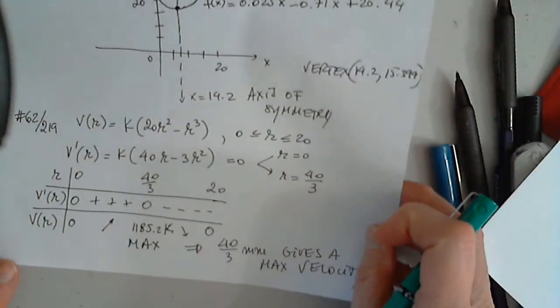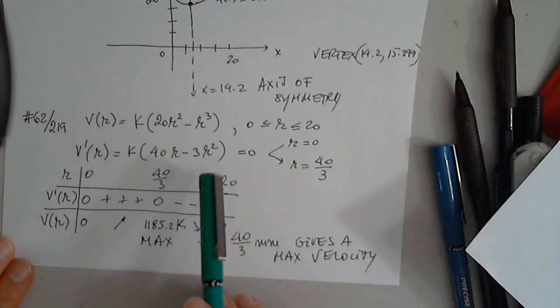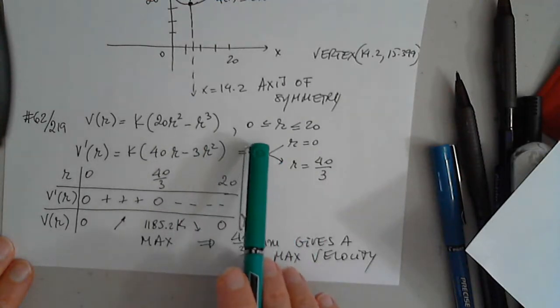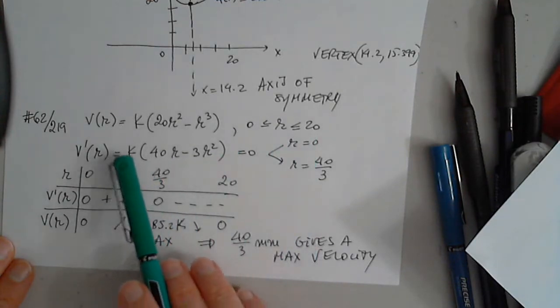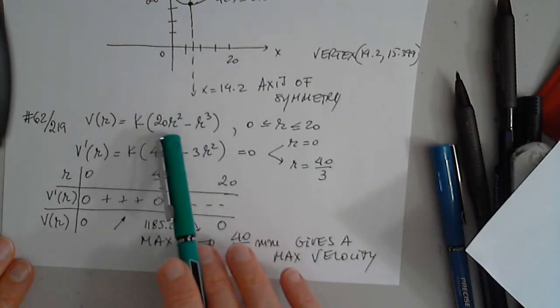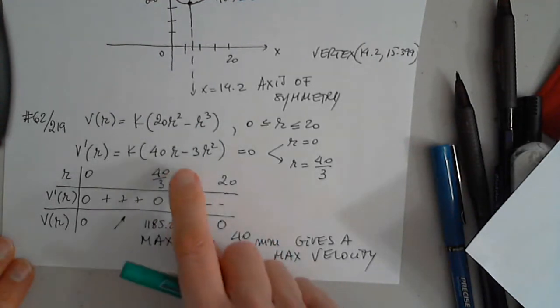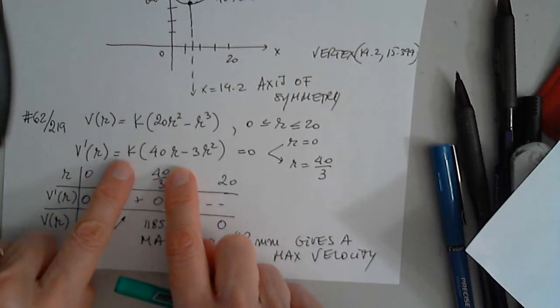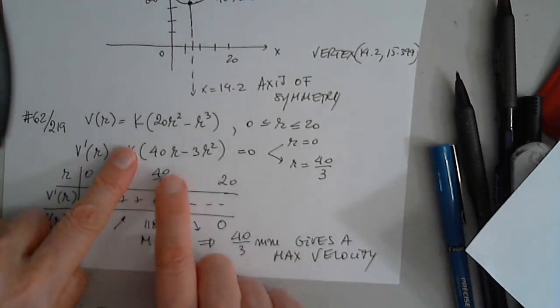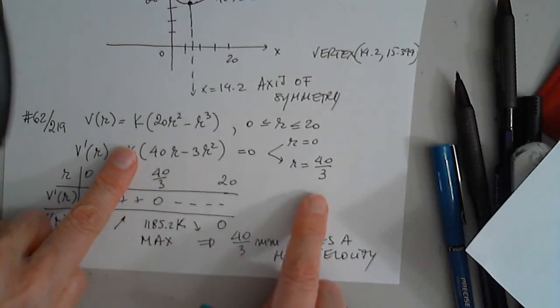And finally, we were given a function to determine its maximum. And on the interval 0 to 20. And I found the derivative, 20 times 2, 40r minus 3r squared. And when I set it equal to 0, I have this quadratic function. You don't have to set this equal to 0. It's a constant, a positive constant. So either r is 0 or r is 40 divided by 3.